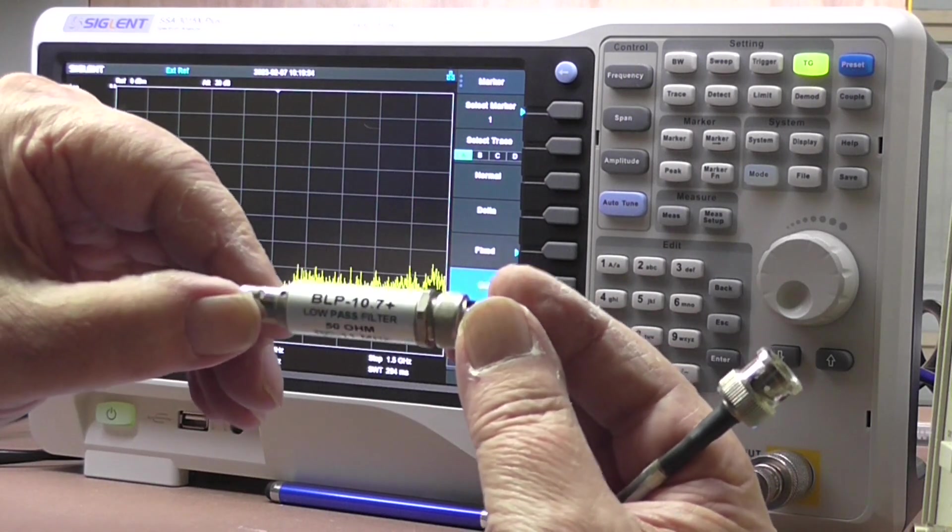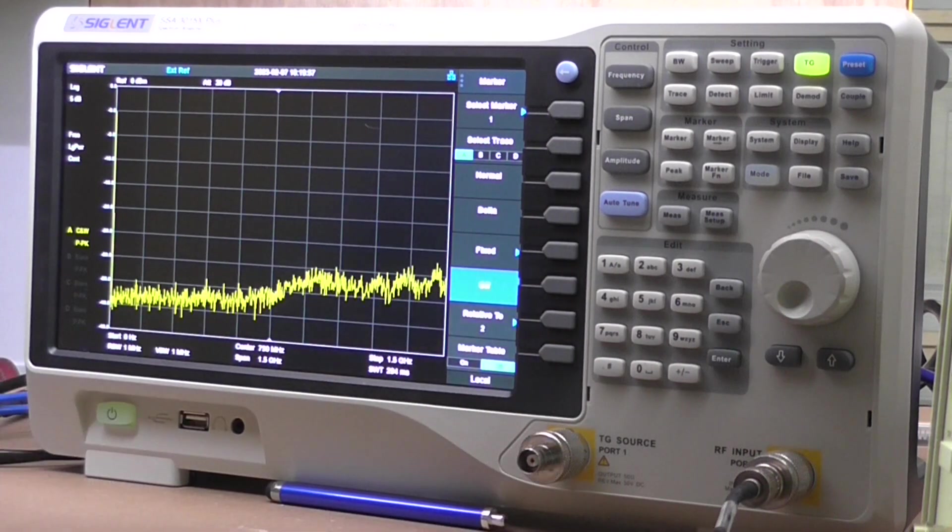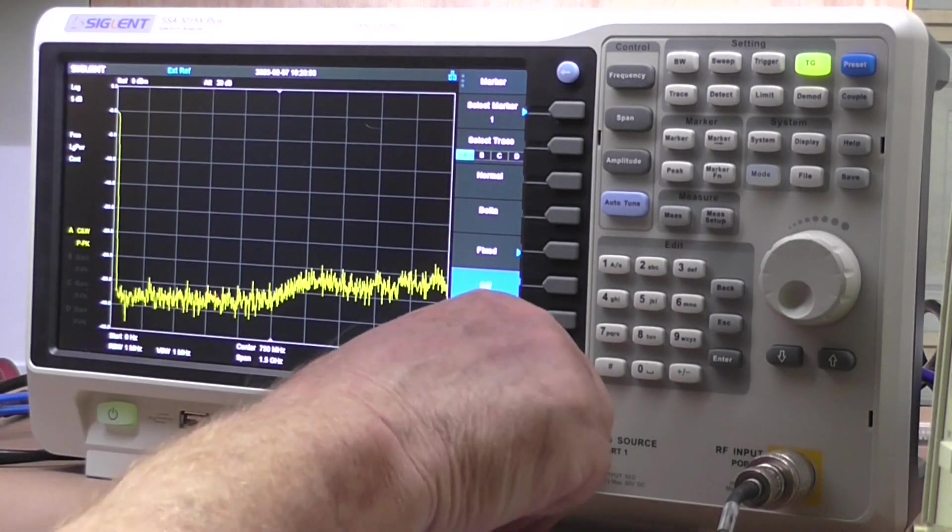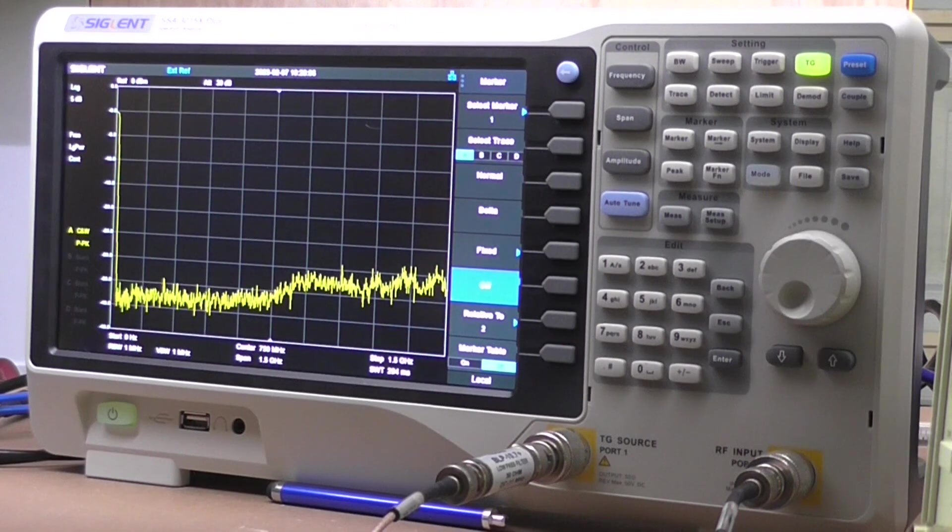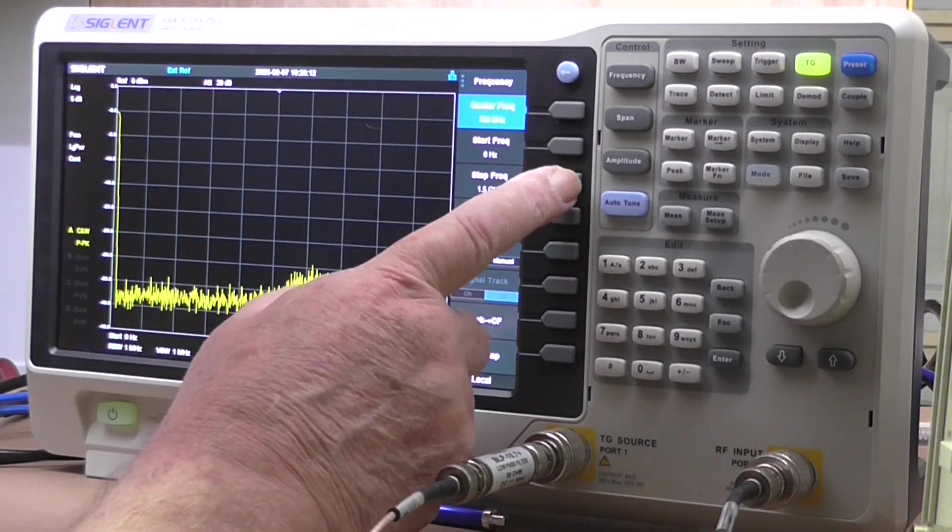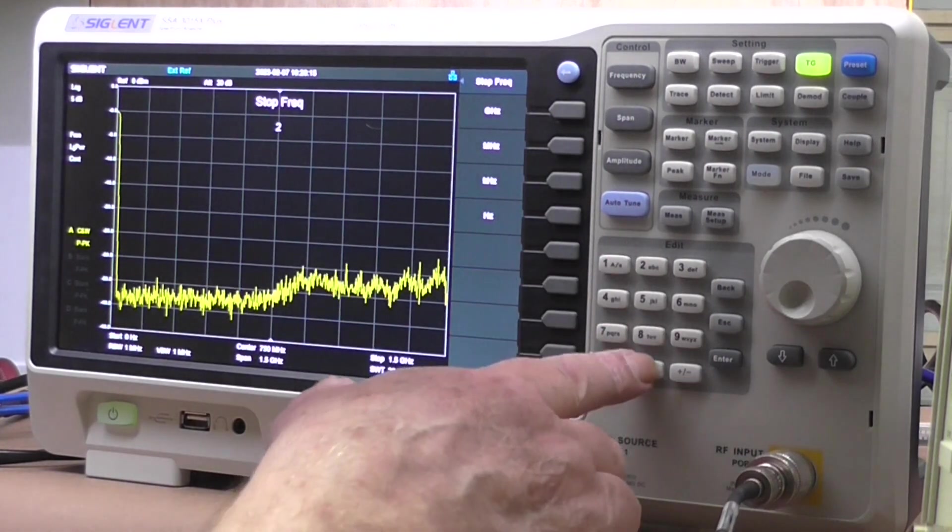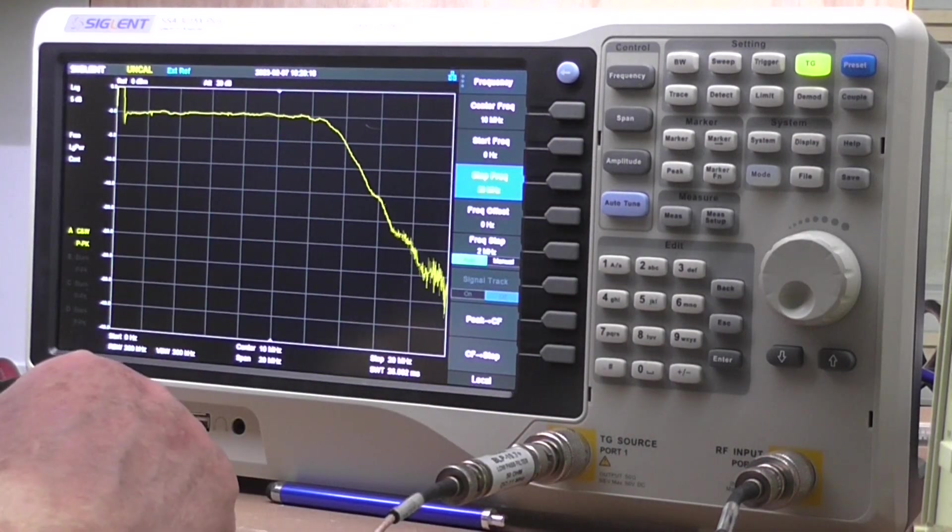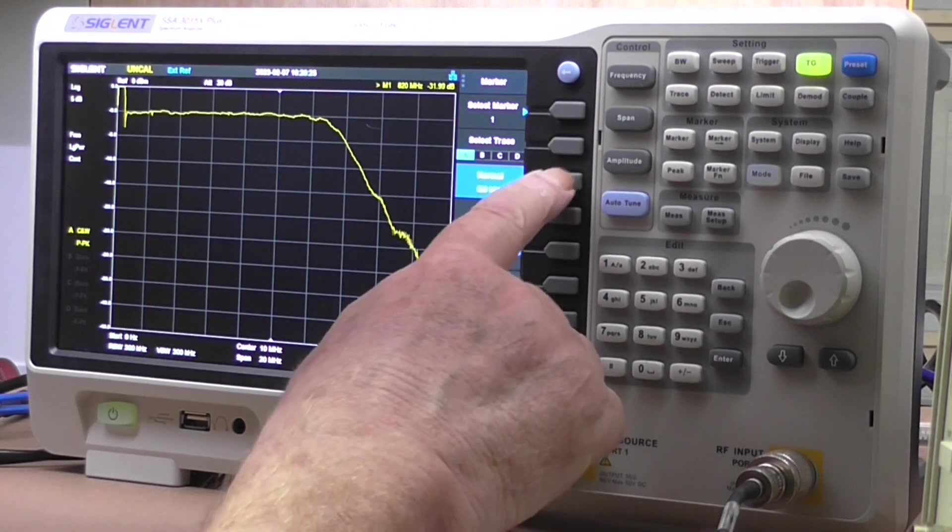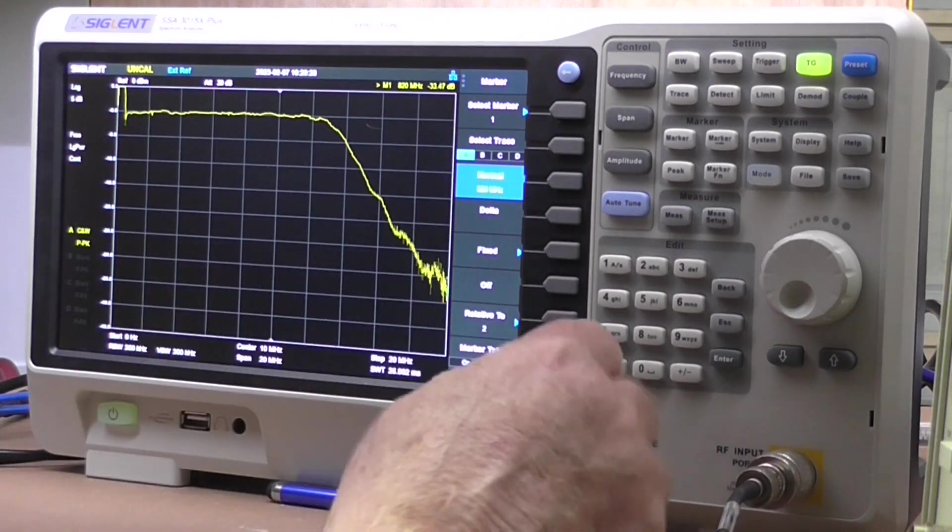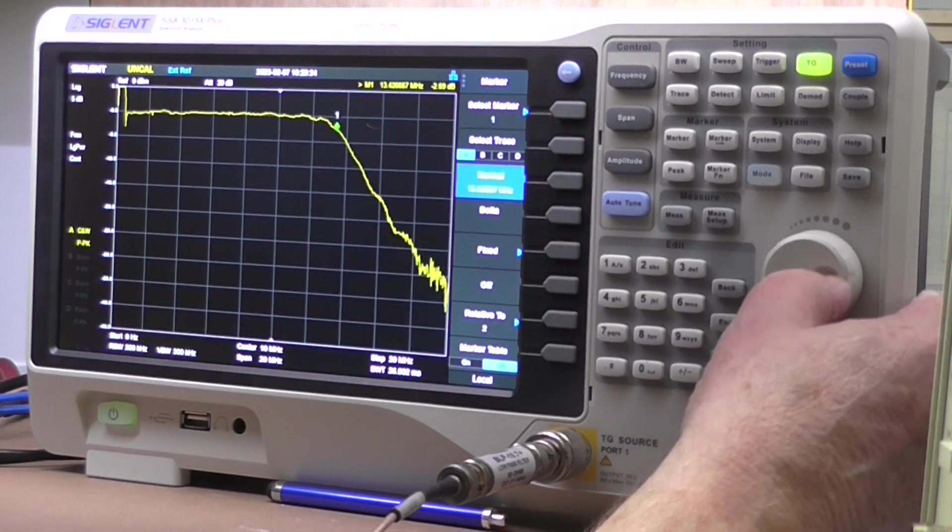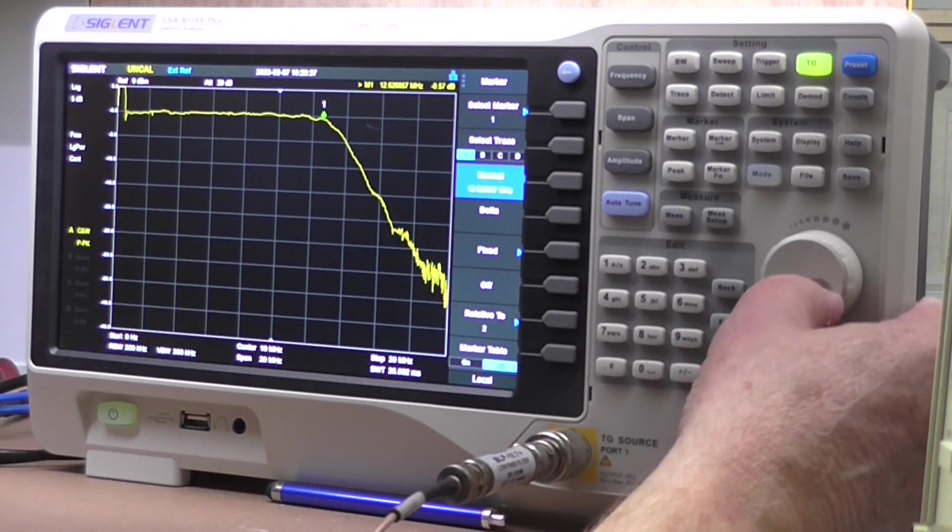Now this next one's interesting. I was given a couple of these, they're low-pass filters at 10.7 meg. Those of you will know that 10.7 meg is also an IF frequency. So in we go and we have to change our frequency and stop frequency at around about, let's say, 20 megahertz. And there's our filter.